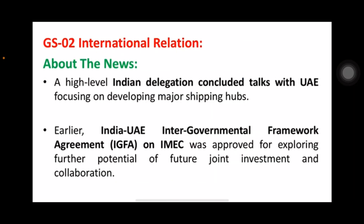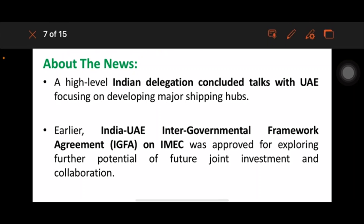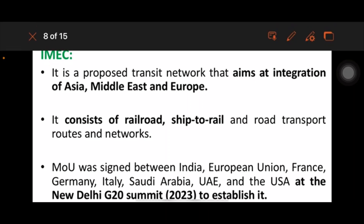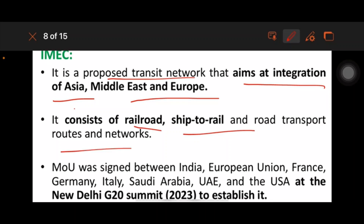The India-Middle East-Europe Corridor comes under GS2 International Relations. A high-level Indian delegation concluded talks with the UAE. The India-UAE Intergovernmental Framework Agreement on IMEC was approved for exploring the potential of future joint investment and collaboration. IMEC is a proposed transit network that aims at integration of Asia, the Middle East, and Europe, consisting of railroad, ship-to-rail, and road transport routes.